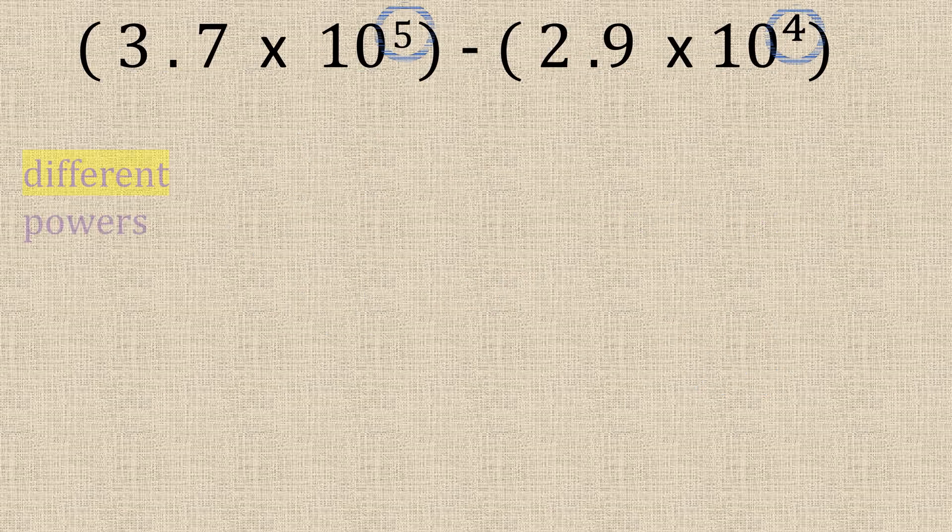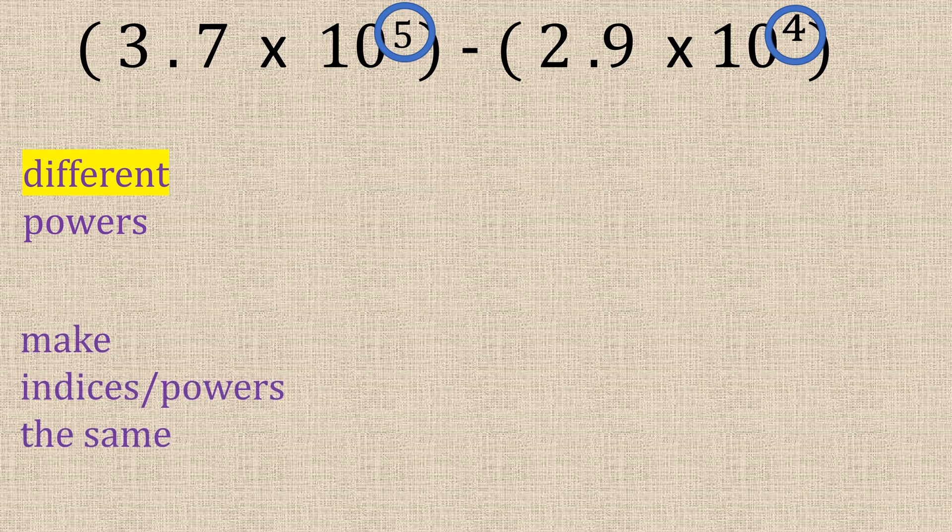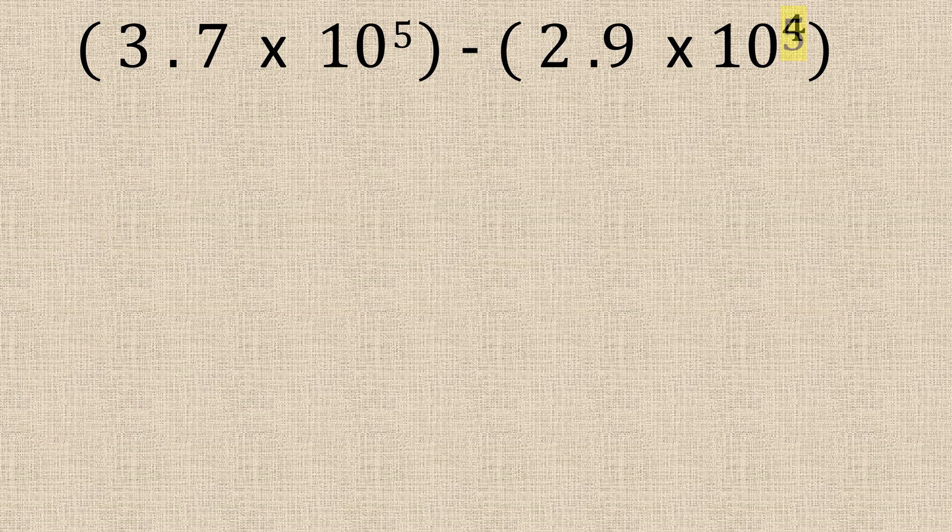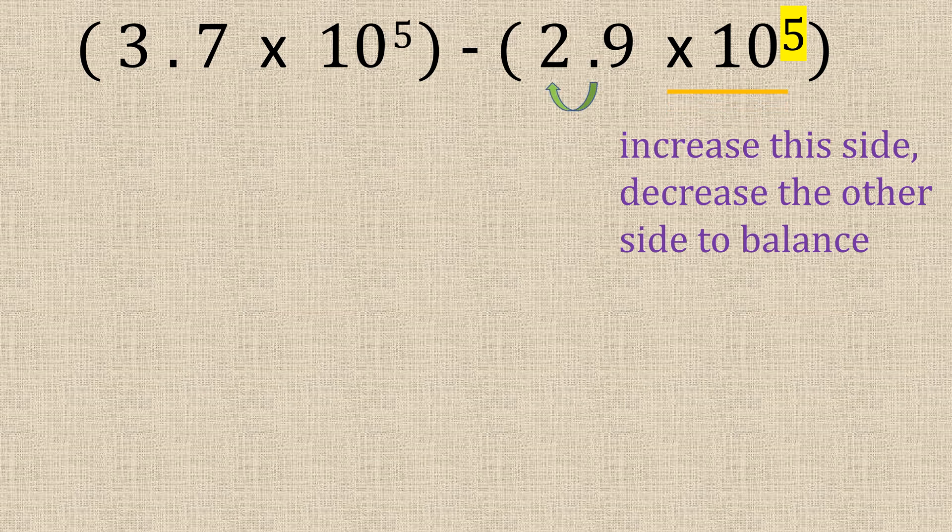For this question you can see the powers are different. Now to work it out you need to make the powers the same. And it's easier if you go to the larger number. So we're going to change that to the power of 5. Because you've increased that side you need to decrease the other side to balance. So we're going to make that 0.29.